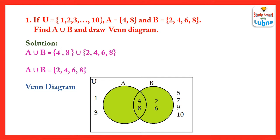This is the Venn diagram of A union B. The rectangle represents the universal set U, while the two circles A and B represent set A and set B. The elements of set A are 4 and 8, written inside circle A, while the elements of set B are 2, 4, 6, 8, written inside circle B. You will notice that the overlapping part of the circles contains 4 and 8, which are common elements present in both set A and set B.